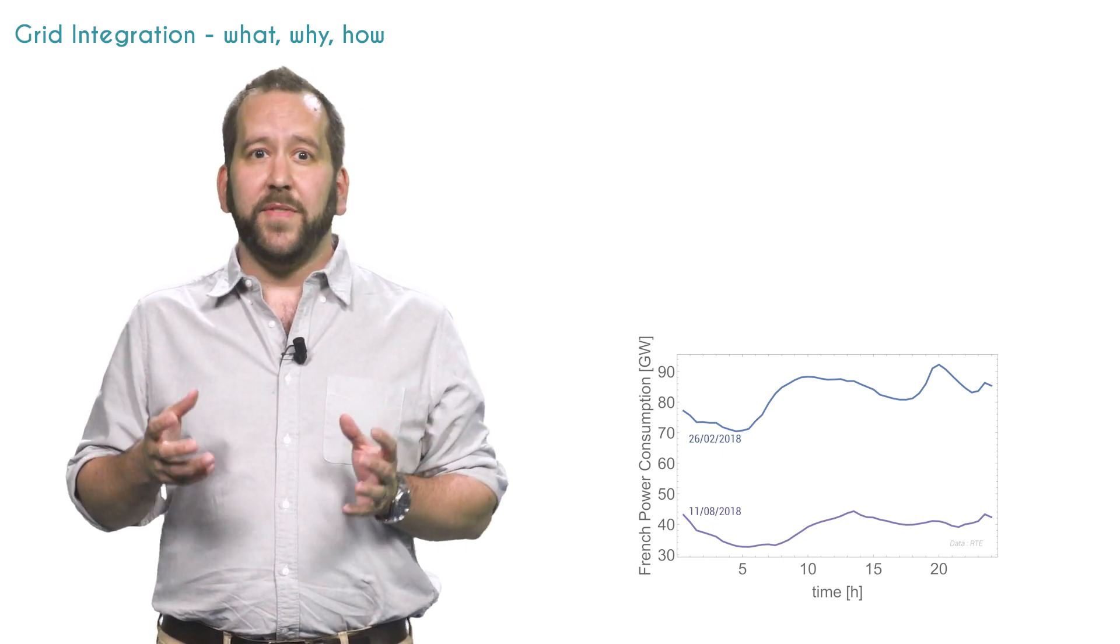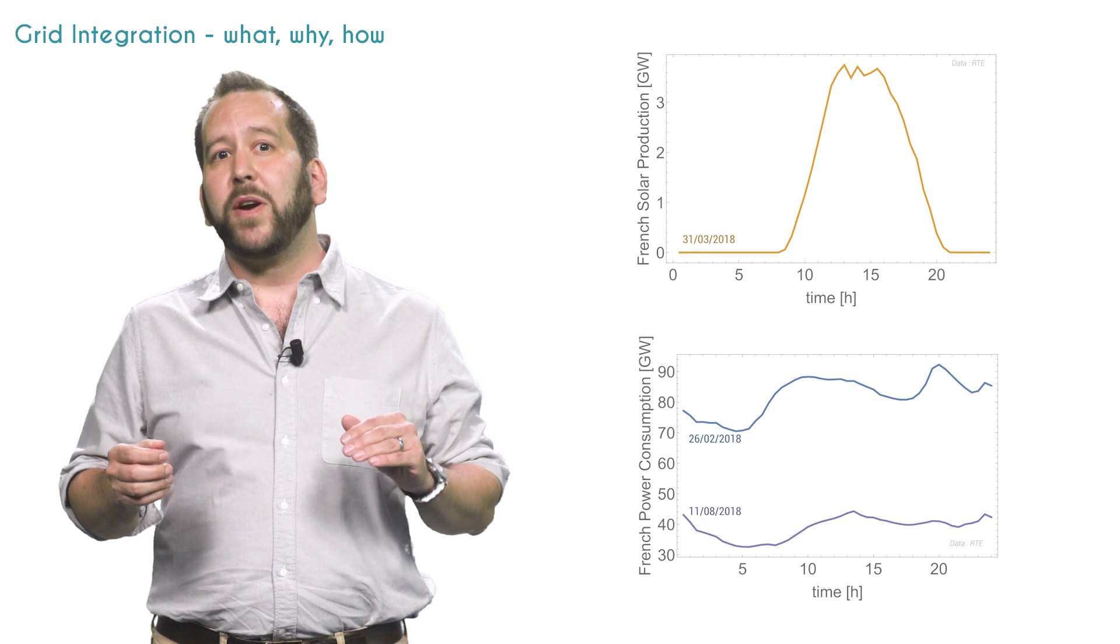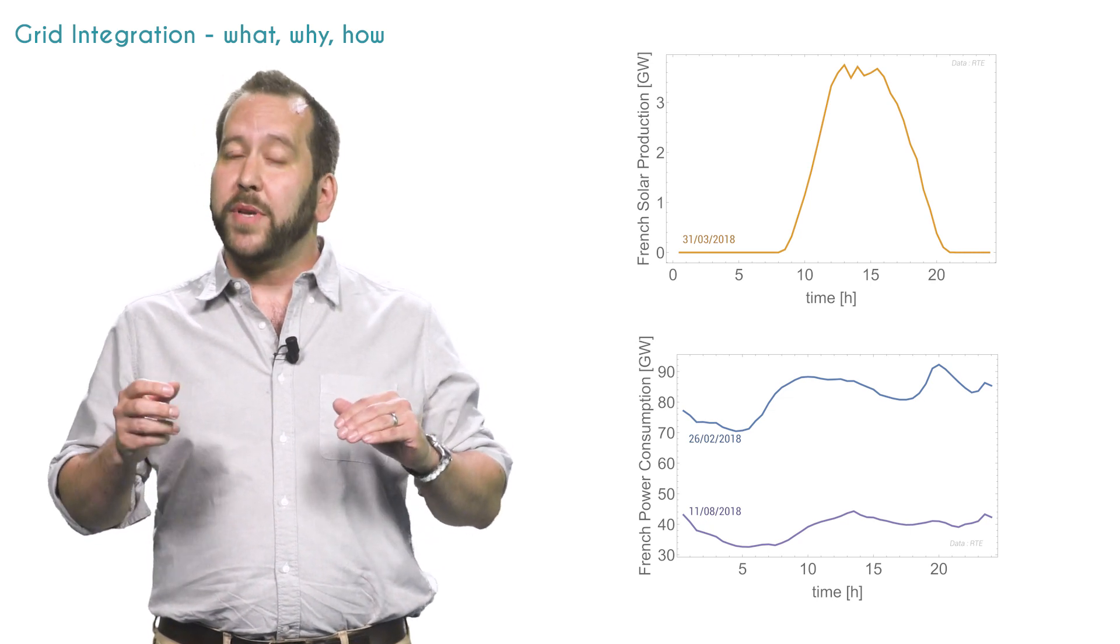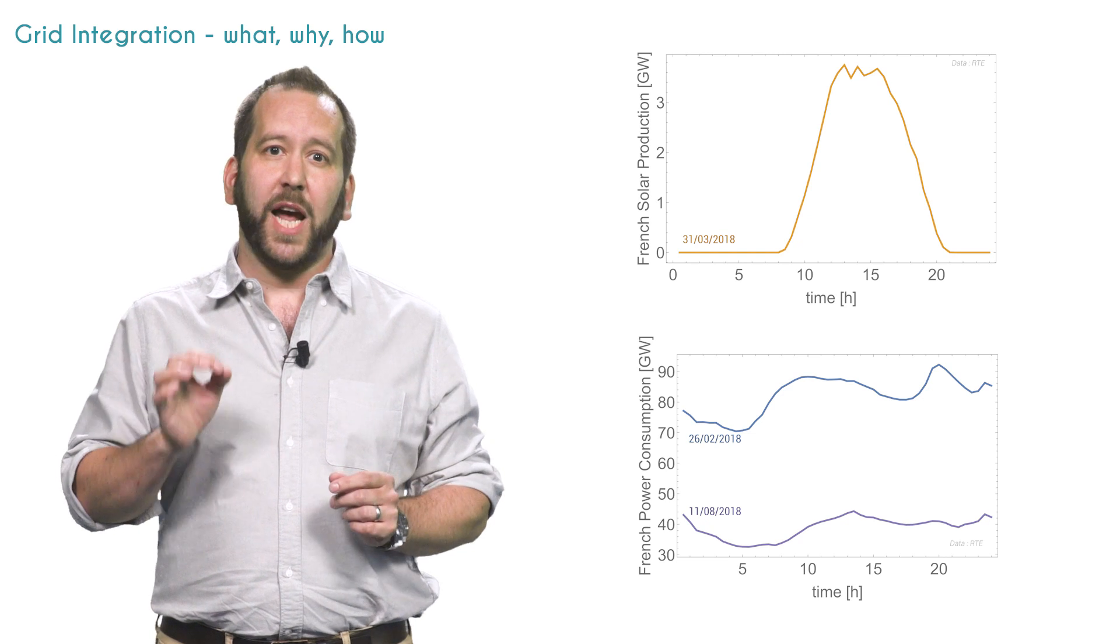In addition to these variations of consumption, solar and wind bring variations to the balance on the supply side and thus raise specific challenges.